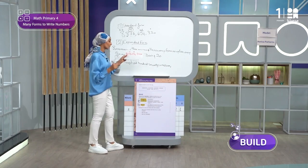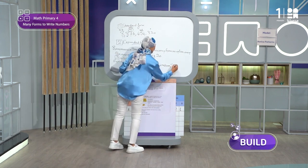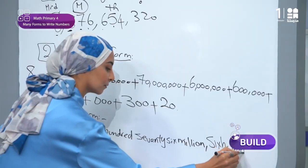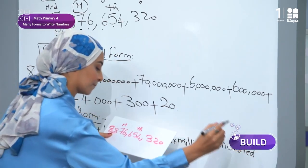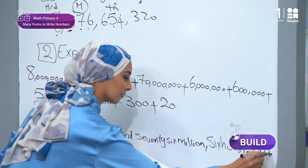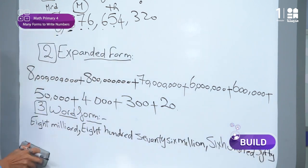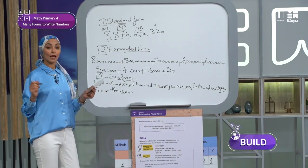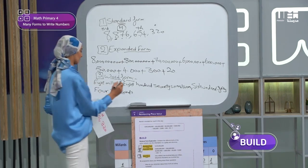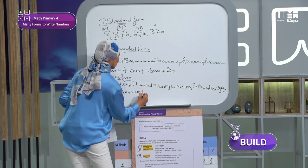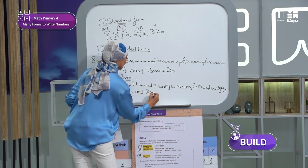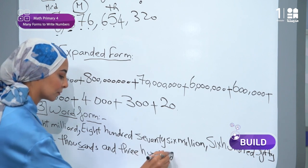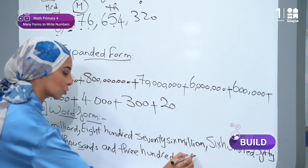And then I have what? Six hundred, fifty-four thousand. Six hundred, fifty-four thousand. This is the name of the period, right?